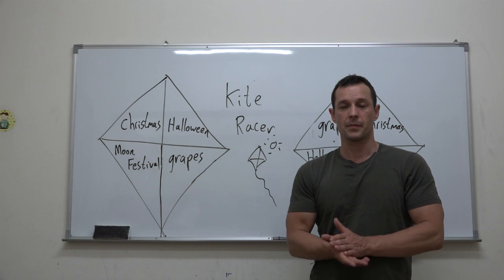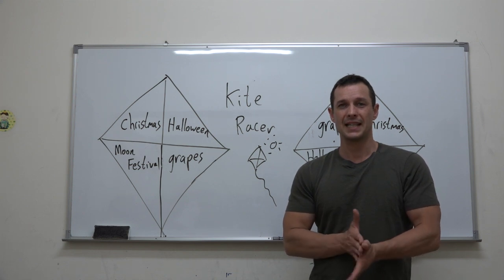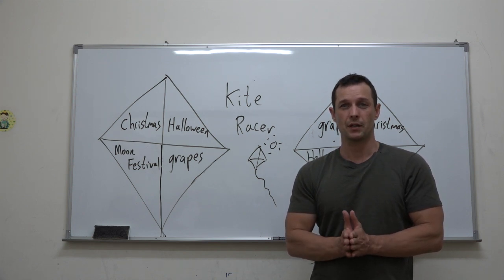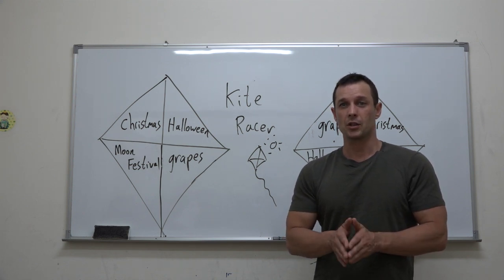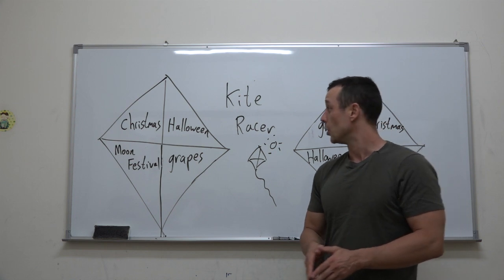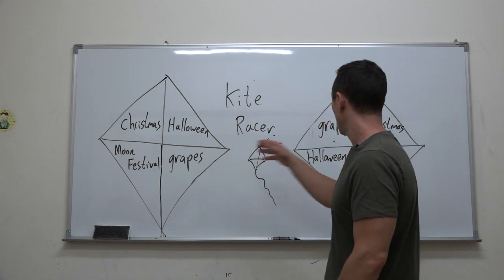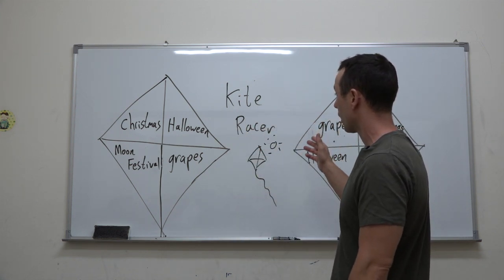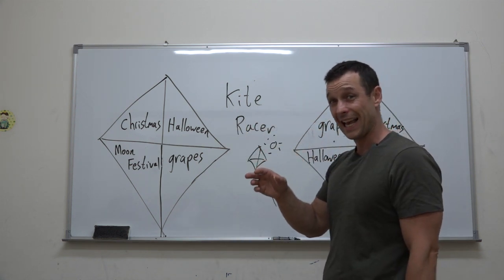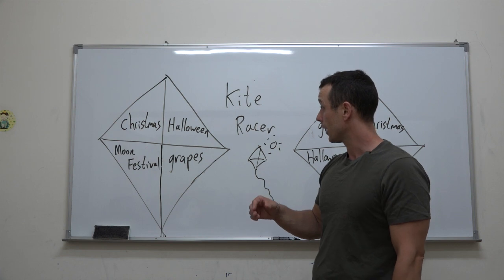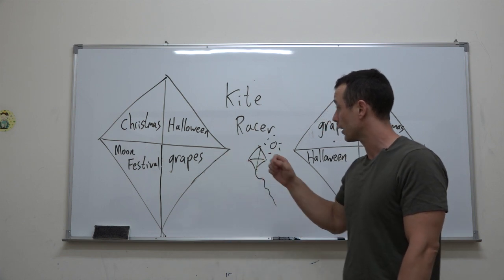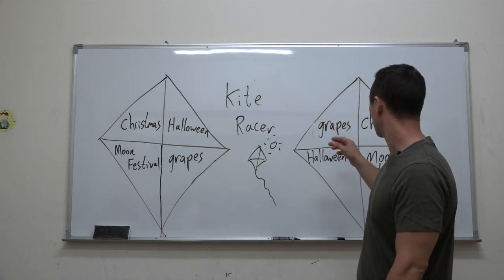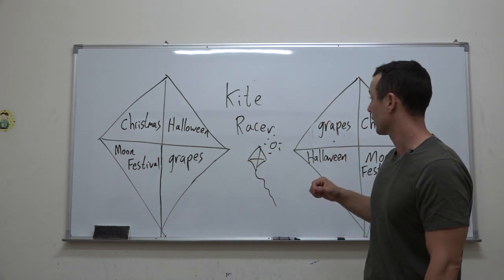Hey everybody, this is Dustin from Guys with Games. Today's game is called Kite Racer. Here's what you're going to need to do: draw two kites on the board and divide them into four sections. You're going to find a category — here I've got holidays.